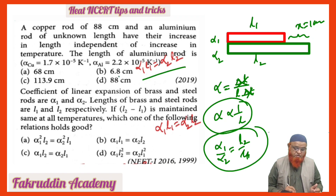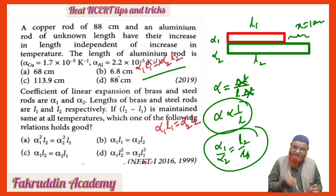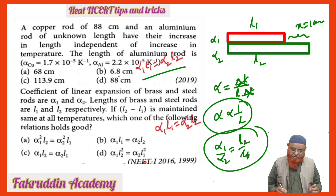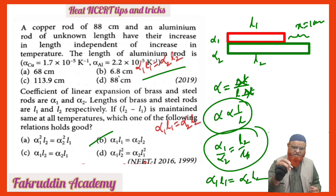You can solve the second problem based on the same concept. Since the alphas are given, you can directly write the formula: α₁L₁ = α₂L₂. The second option is correct. Hope you have enjoyed this — thank you.